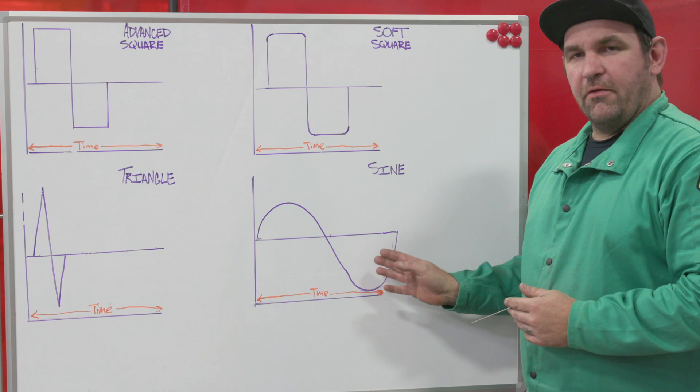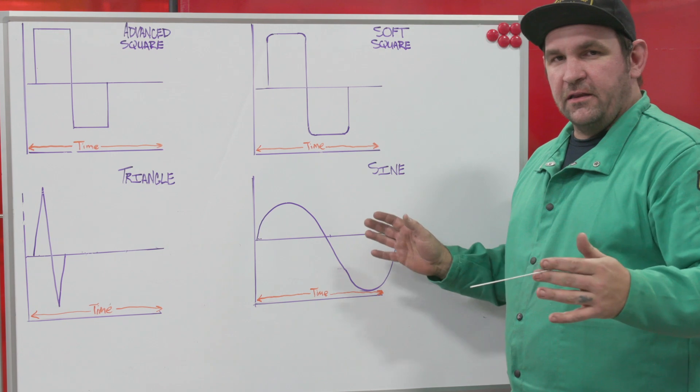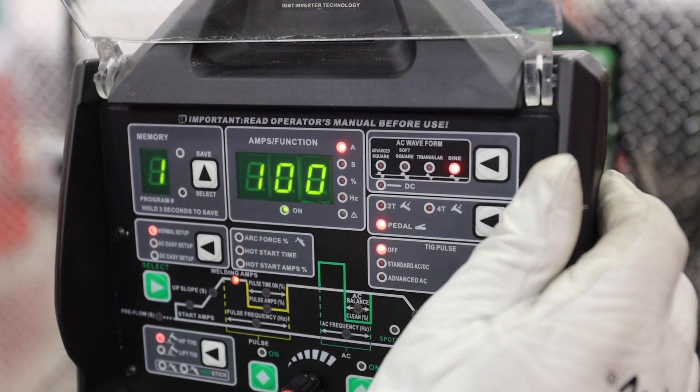So this was normally ran at like 60 Hertz from your old transformer machines. Today, we're going to keep all the settings the same. We're going to run the sine wave at 120 Hertz and see how it compares to the other three.